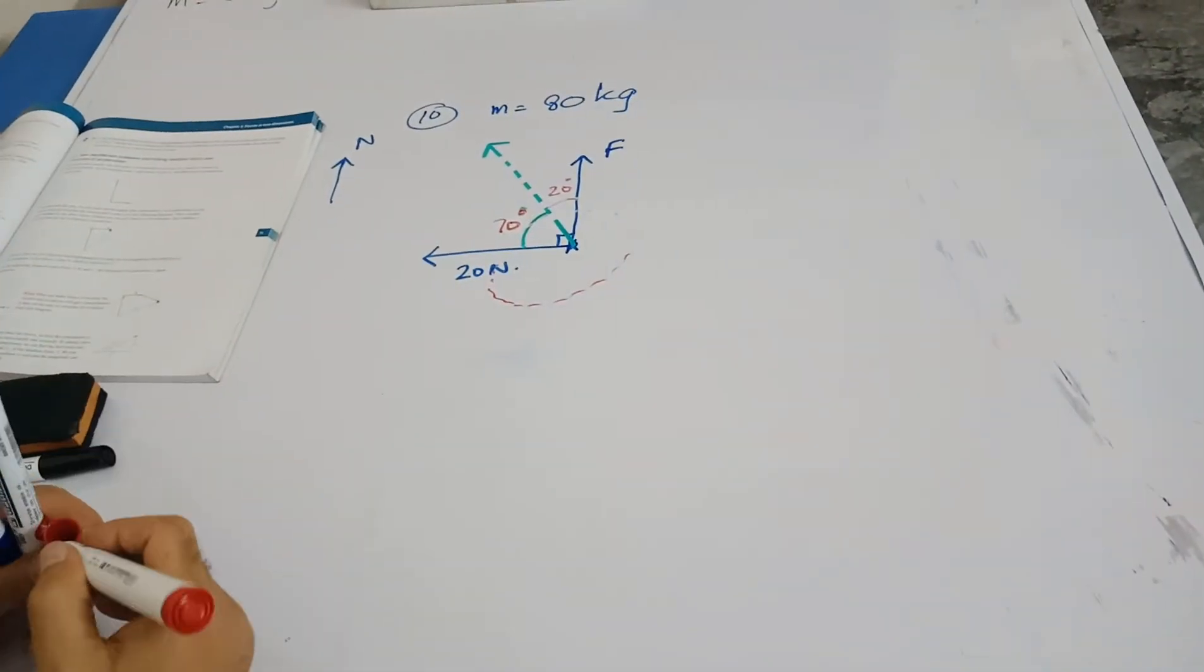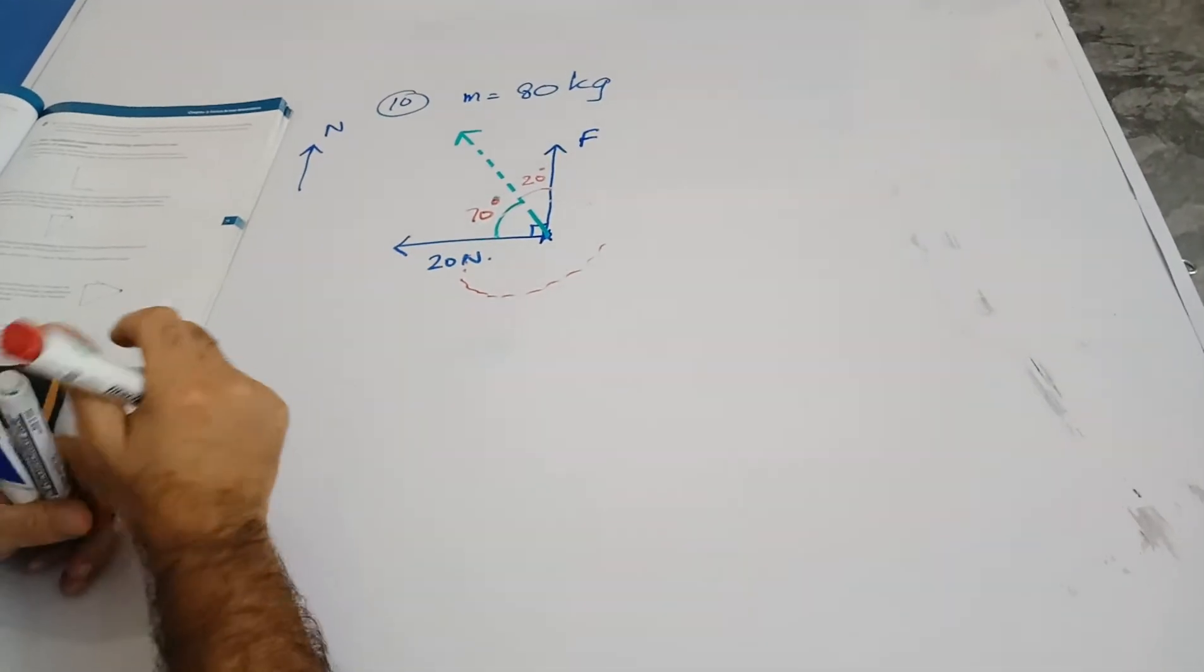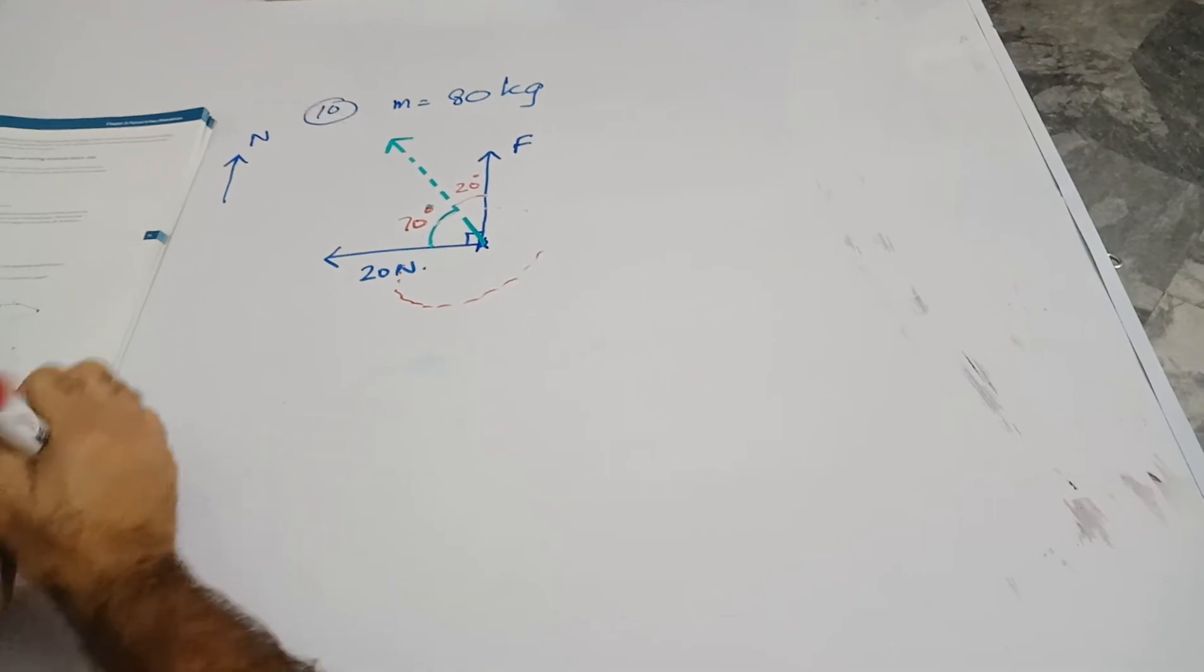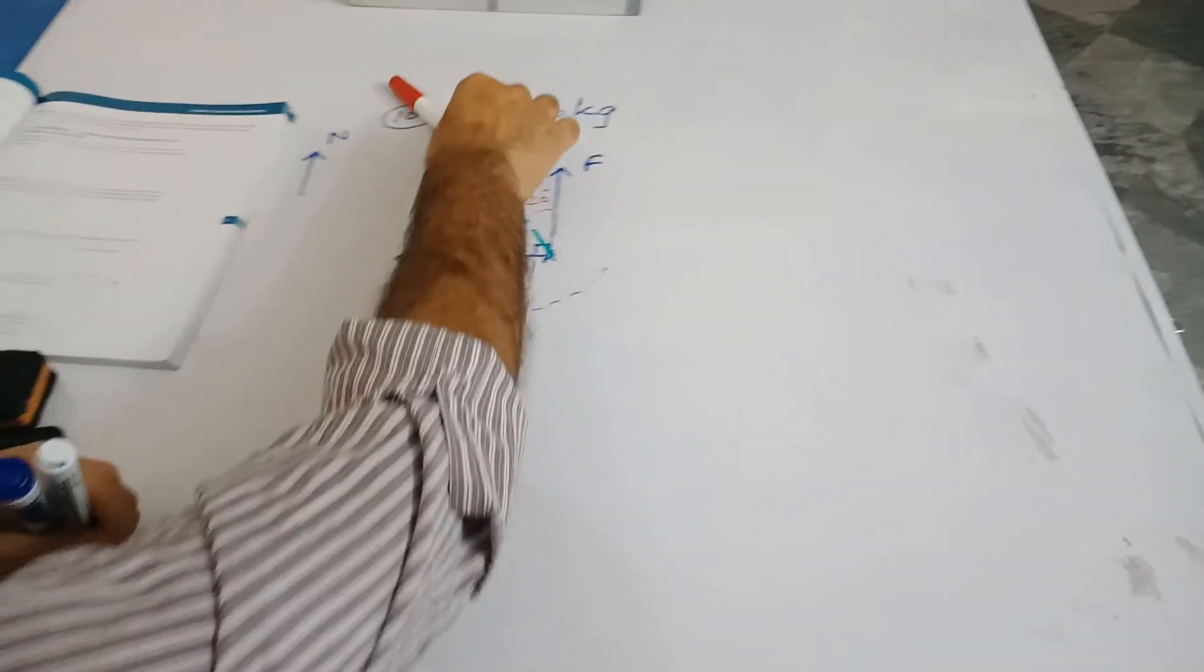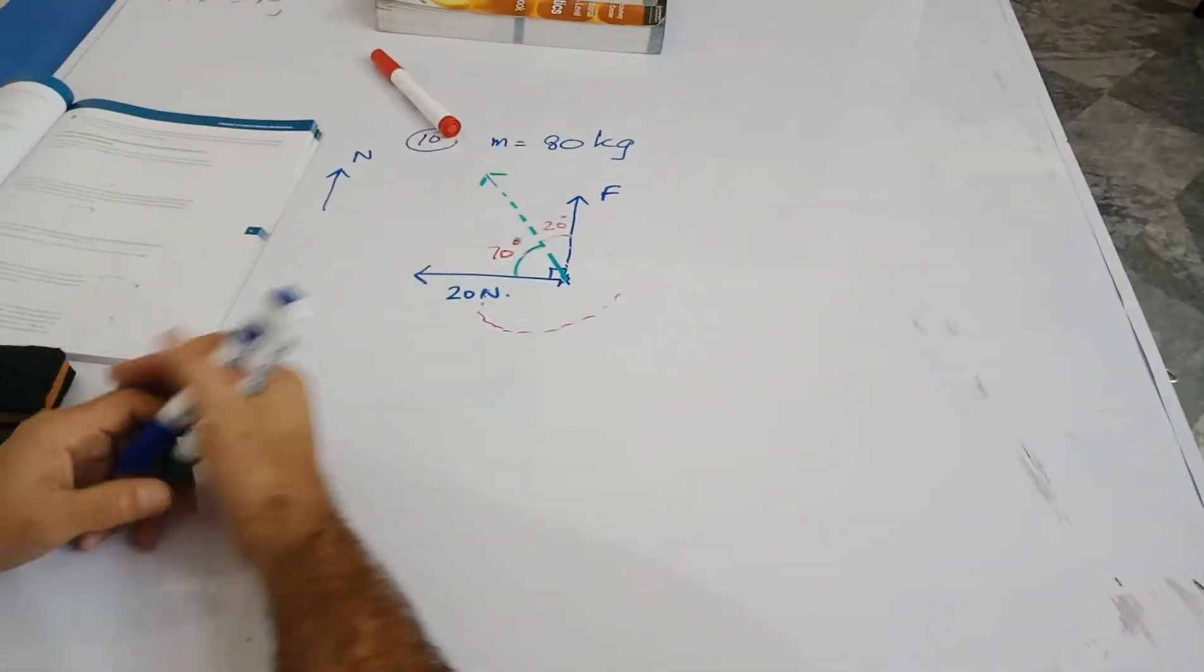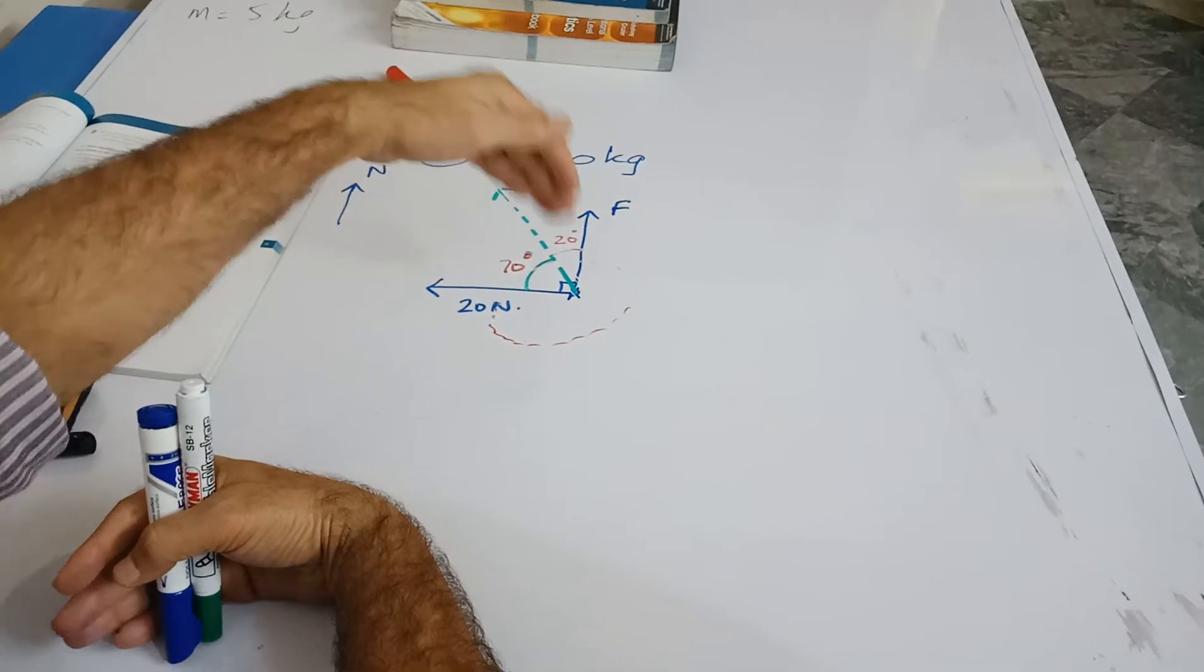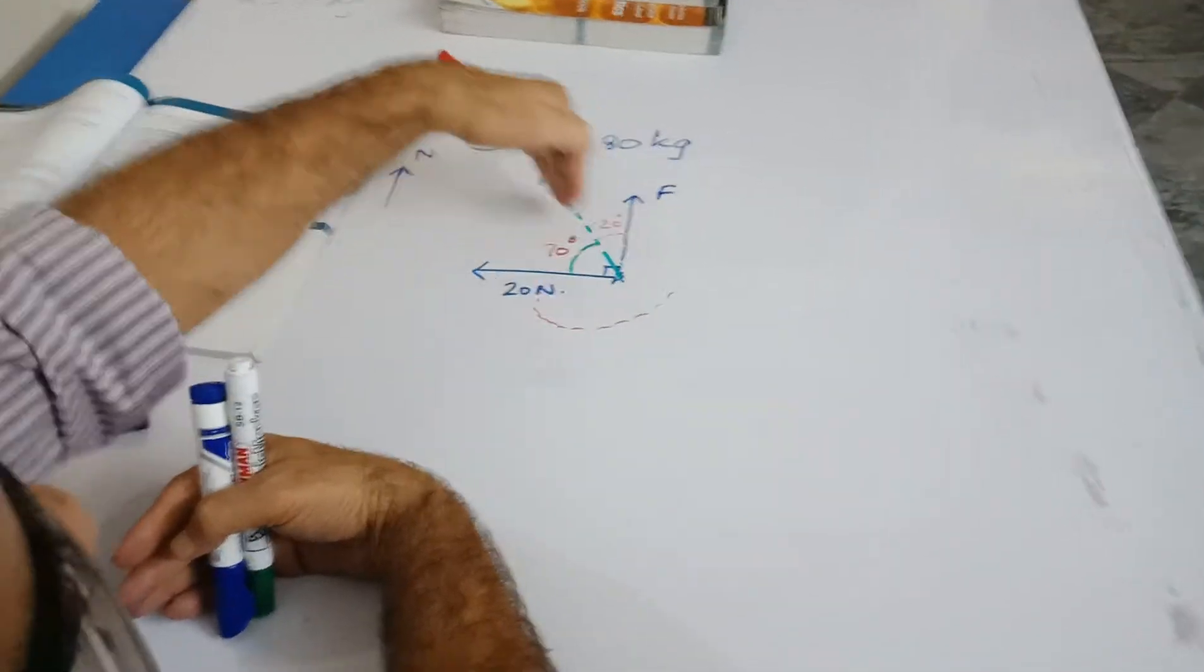Now we have to find force F and the acceleration of this surfer. This is the direction the surfer is going in. These two forces, they are neither parallel nor perpendicular to this direction, so we need to resolve these two forces in the direction, both parallel and perpendicular.